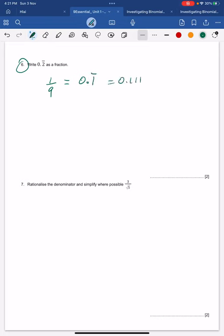It's 0.1 forever. So when we see 0.2 forever, can you see that it's just double 0.1? So it's going to be 2/9. That's probably the easiest way of doing that.